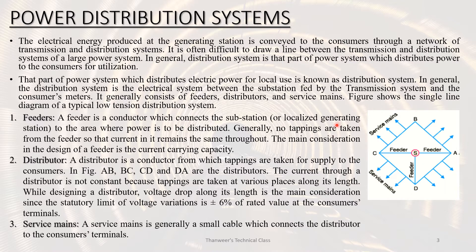It is often difficult to draw a line between a transmission and distribution system. In general, the distribution system is the part of the power system which distributes power to the consumer for utilization. It is the electrical system between the substation fed by the transmission system and the consumers' meters. The substation consists of feeders, distributors, and service mains.